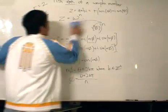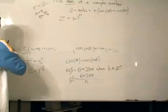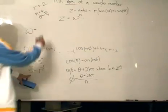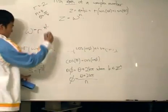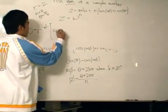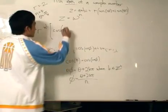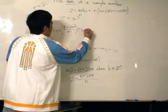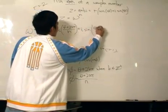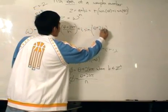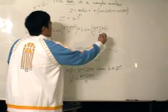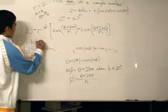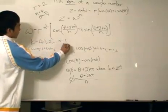So, from there, we can just immediately write the complex number w. Because, we define it as the magnitude is r to the power of 1 over n, followed by cosine, the argument which is this, theta plus 2k pi over n plus i, likewise for the sine function. Boom, yeah. Okay, there we go. Where k is equal to 0, 1, 2, n minus 1.